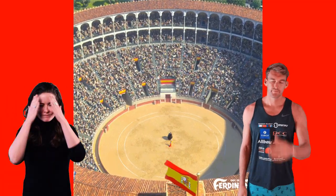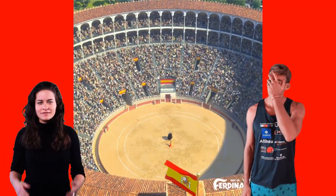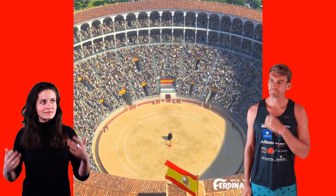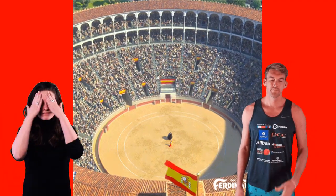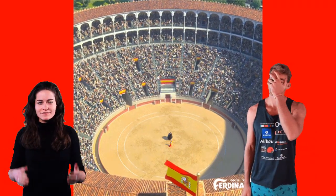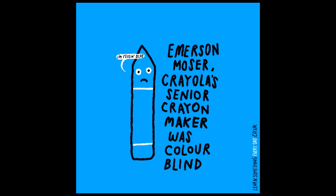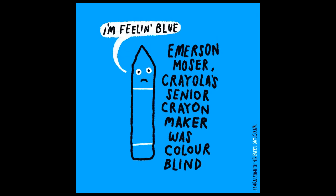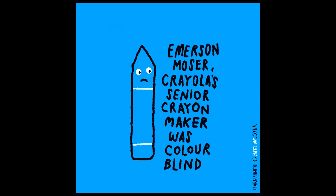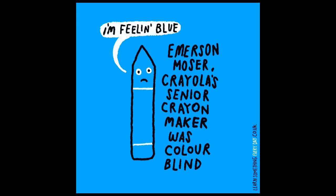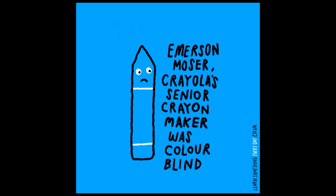But why red? Because red equals fire, passion, love. And don't feel bad if you're colorblind. Emerson Moser, Crayola Senior Crownmaker, was colorblind. And who else is colorblind? This guy right here.